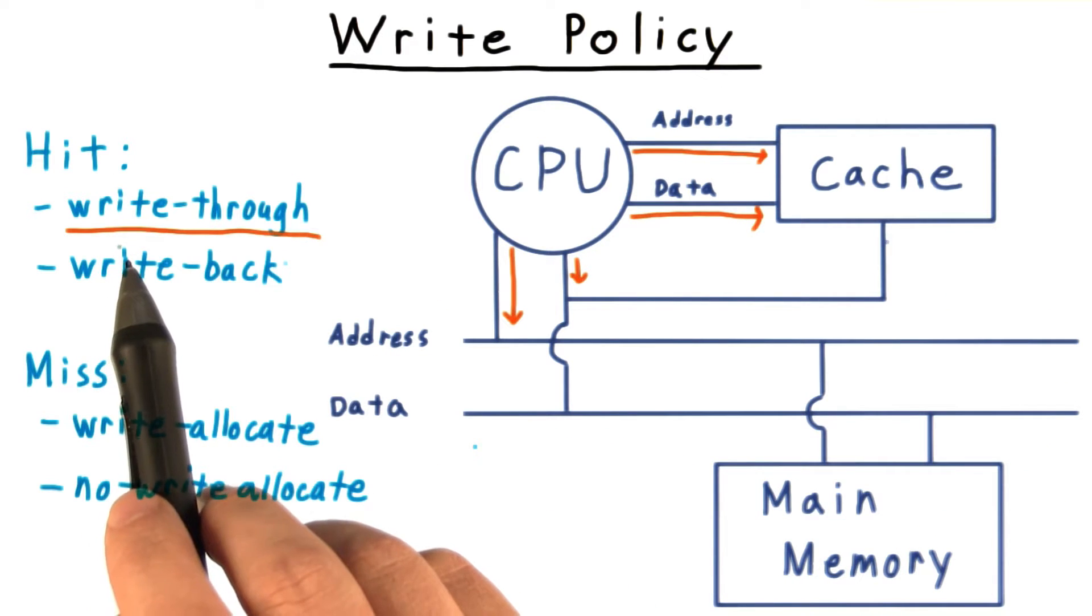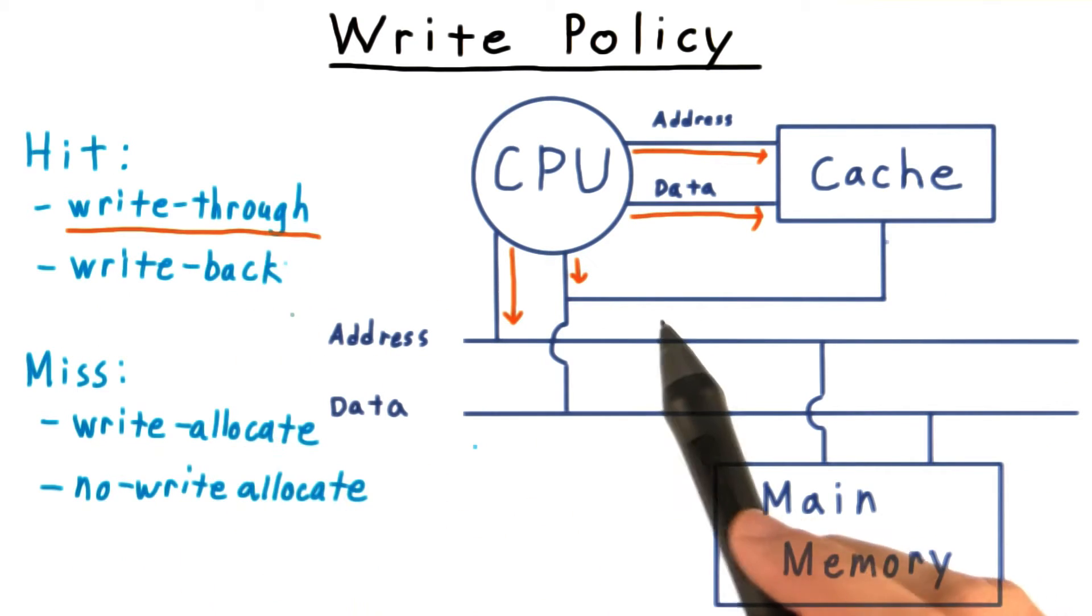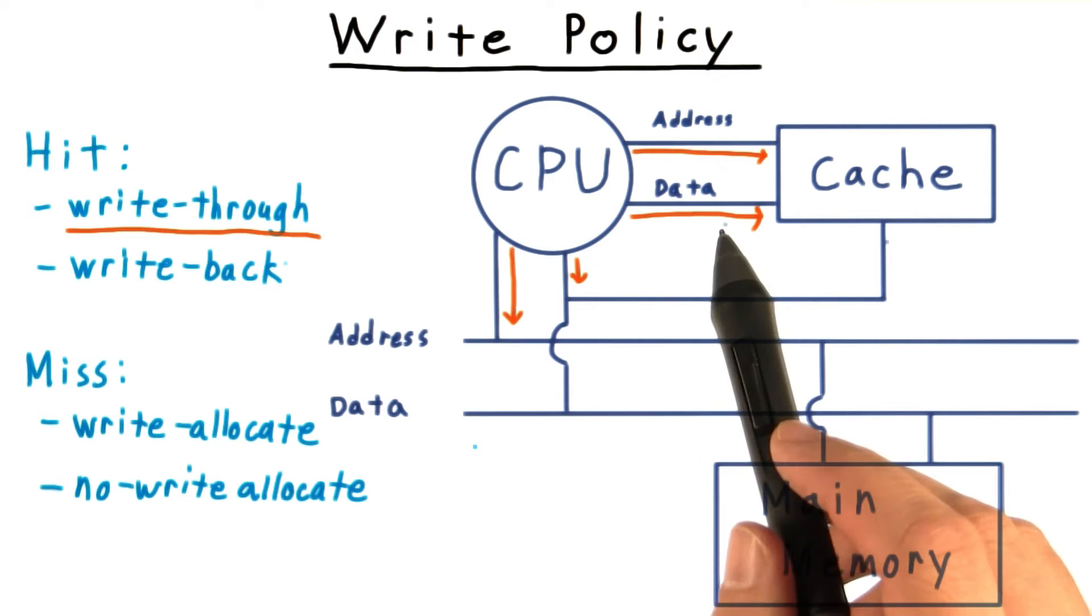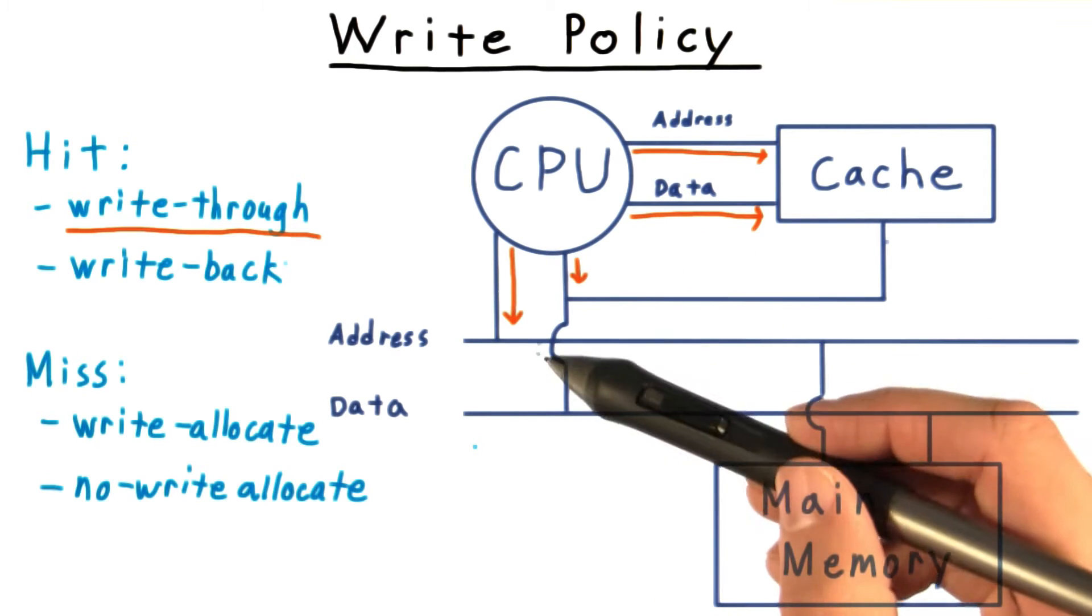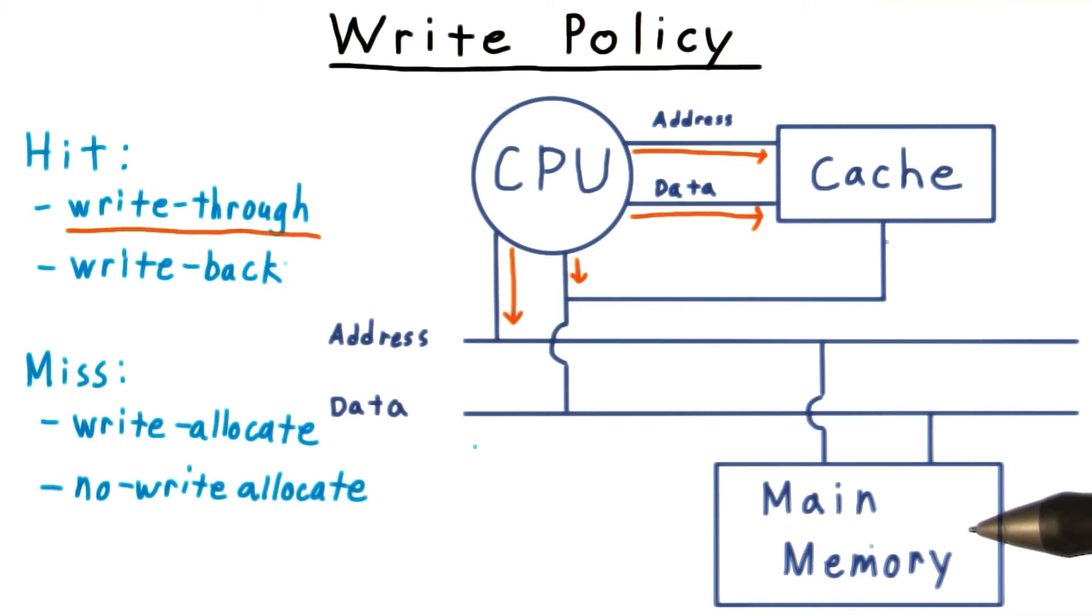On a hit, the most obvious thing to do is to write through to memory. That is, we'll write to the cache, and then also write to the main memory to copy the data and keep the cache and main memory consistent.